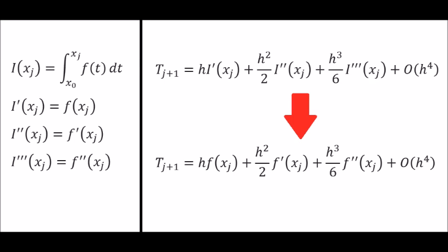If i is equivalent to the integral of the function f, then the derivatives of i are such as seen on the left side of the screen. I substitute those into the expression for t sub j plus 1. Now we have an expression with f's instead of i's.